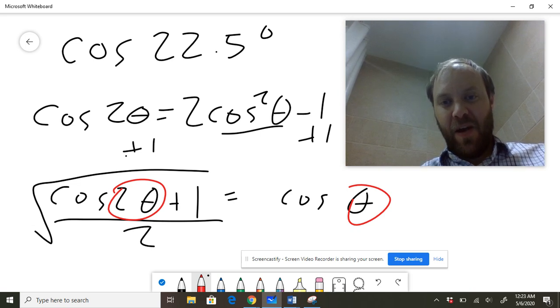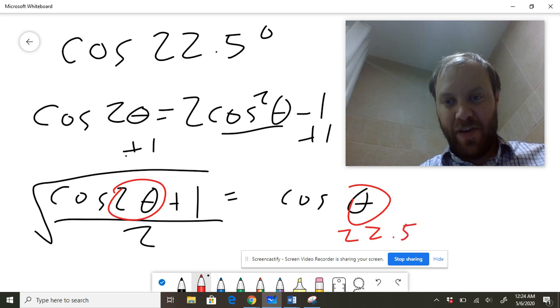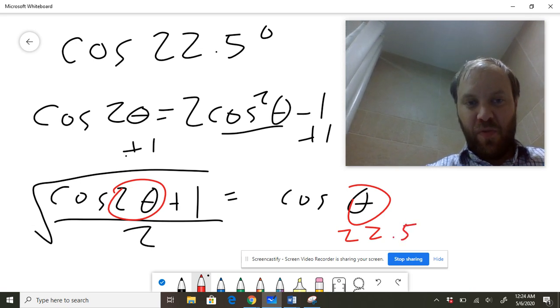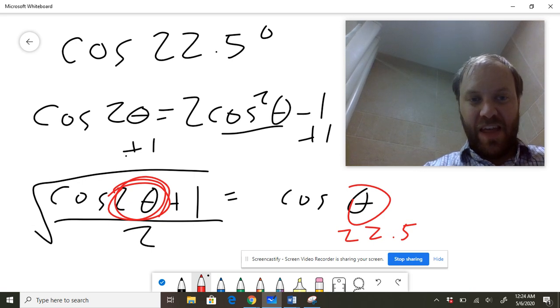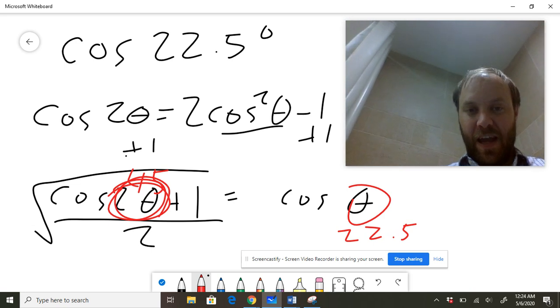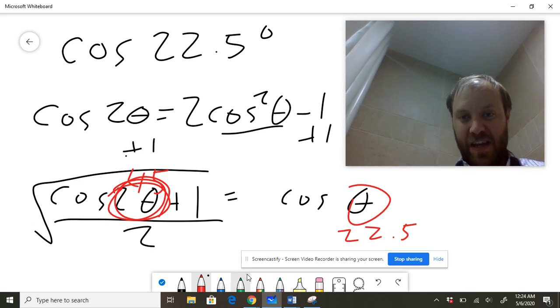In other words, if I want the cosine of 22.5, I put 22.5 in here, it's going to get multiplied by 2 over on this side, and then we're taking the cosine of 45.